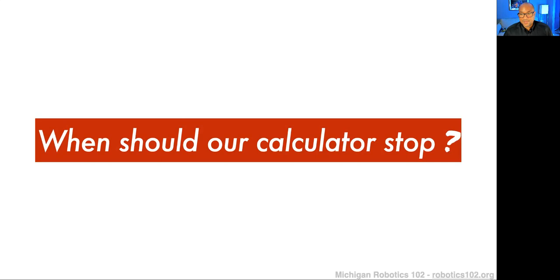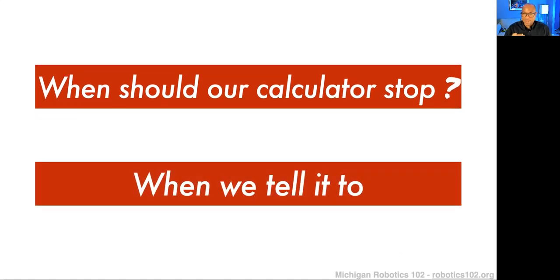The question then is: when should our calculator stop? Our pocket calculator is going to continue over and over again — it's going to perform infinitely — but it should stop at some point. Our pocket calculator should stop when we tell it to. This gets to the next thing we're going to talk about on top of branching, which is iteration.